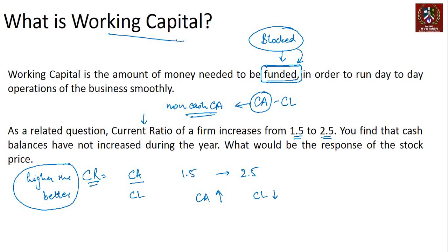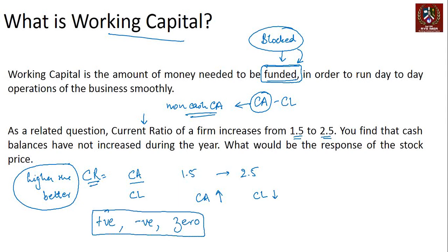The next question that comes to mind is: what is an ideal number for working capital? Should it be positive, should it be negative, or should it be zero? We will discuss that in our next section.